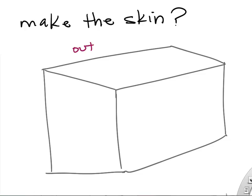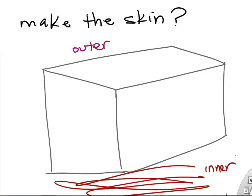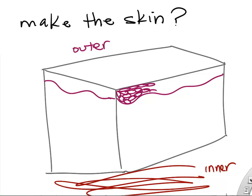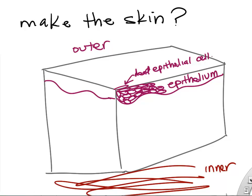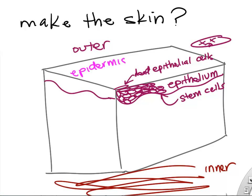Finally, let's quickly draw the skin. The skin has an outer exposed layer, and the inside of your skin is exposed to the inside of your body. We need epithelium — it covers the outer portion of the skin. The outer layer you touch with your finger consists of dead epithelial cells. We have stem cells at the bottom of that epithelial layer, and this is called the epidermis.